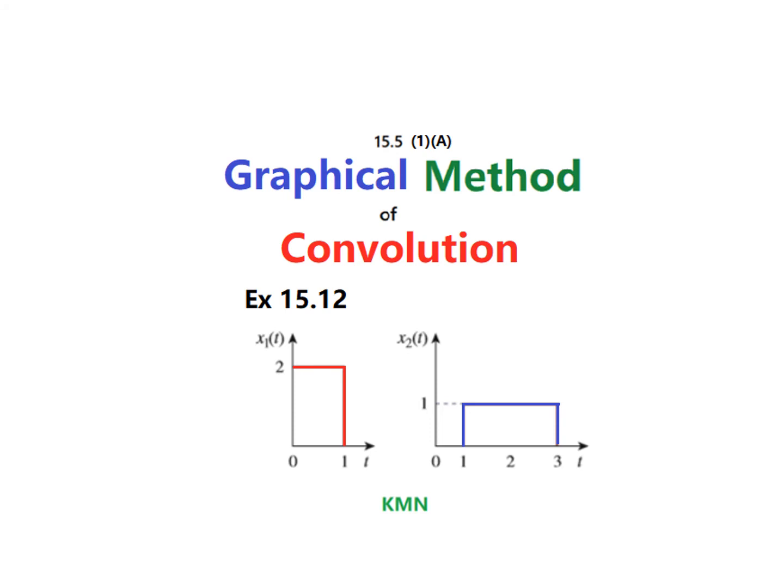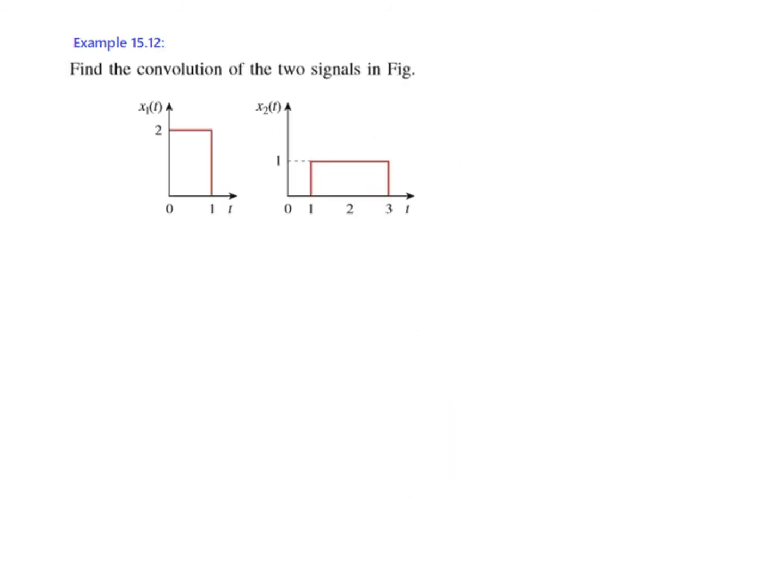Bismillahirrahmanirrahim. In this video we will solve example number 15.12 from the book Fundamentals of Electrical Circuits by using the graphical method. So this is the question. Find the convolution of the two signals. The signals are x1t and x2t as given here.